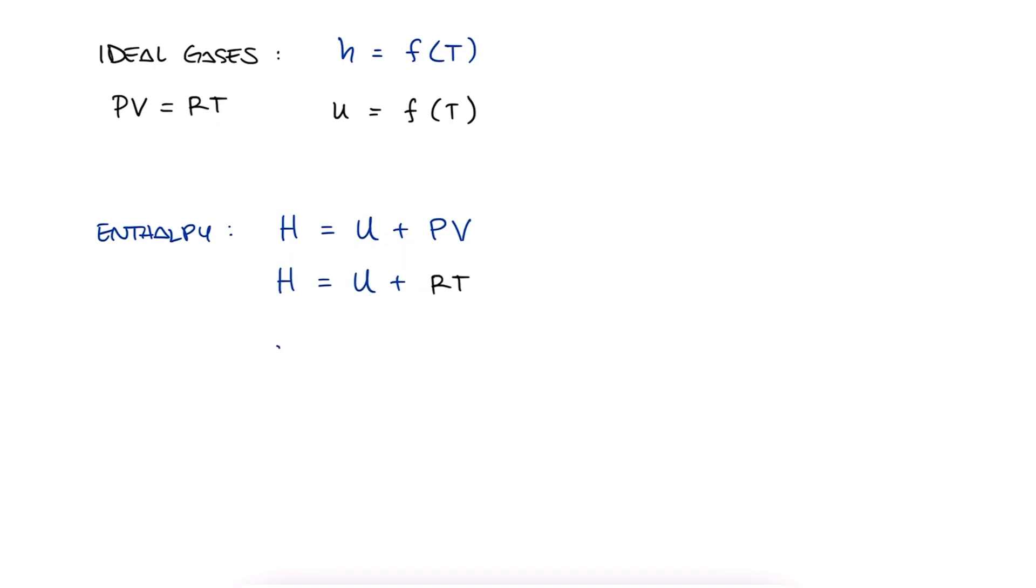For infinitesimal changes, dh is equal to du plus r dt, or what is the same after differentiating, dh/dt is equal to du/dt plus r. Now, remember what these two terms were from our previous lecture?